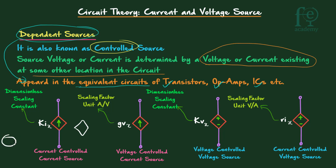The first type is the current-controlled current source (CCCS). The controlling current Ix is scaled by a dimensionless factor K, giving K times Ix as the output current. The second type is the voltage-controlled current source (VCCS), where the current depends on a voltage Vx at another location, scaled by a factor G. Since current depends on voltage, G has units of A/V.